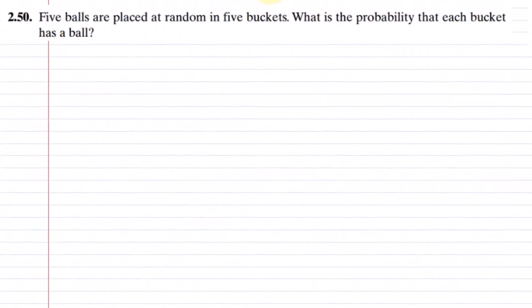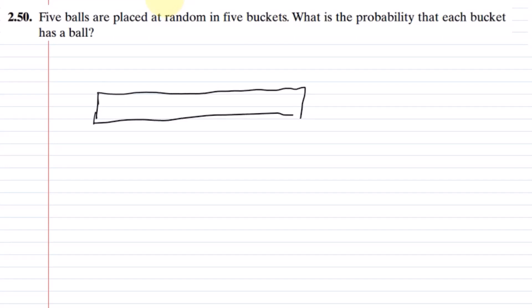Now we have question 2.50: 5 balls are placed at random in 5 buckets. What is the probability that each bucket has a ball? We have 5 buckets labeled 1 through 5. These are placed in such a manner that a bucket can also have more than one ball.